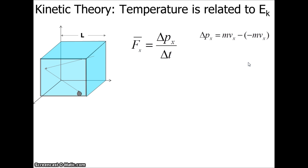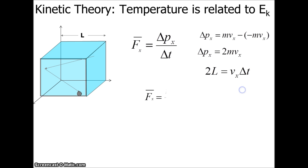The change in momentum would be MVx minus negative MVx. The reason that's true is because this is an elastic collision and the speed is the same afterwards, so the change in momentum is 2MVx. L is the length of the container, so 2L equals the distance traveled in time delta-t using kinematics D = V̄t. Solving for delta-t gives 2L/Vx, and simplifying we get MVx² / L.